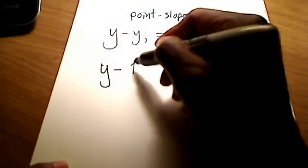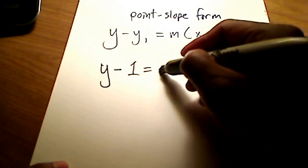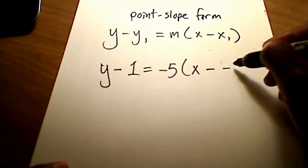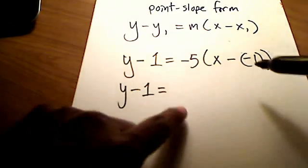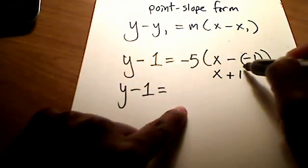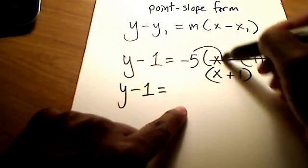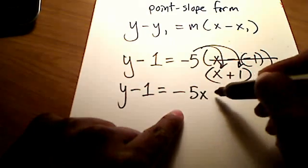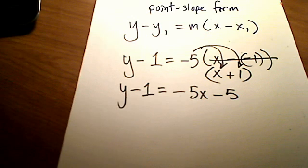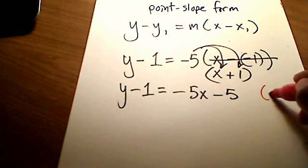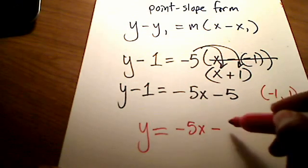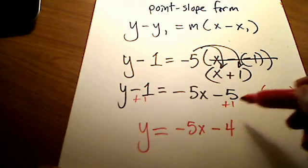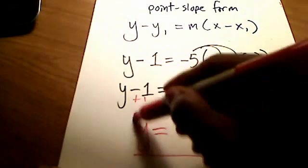The slope was a negative 5. X minus my x value was a negative 1. And I'm going to clean all this up a little bit more here. I'm just going to leave this as y minus 1 on the left side. This right here minus the negative is really x plus 1. Really, that's what that is going on inside here. And distributing the negative 5 to both of these gives me a negative 5x minus 5. One last thing. Let's just add 1 to both sides, and my final answer for the equation of the tangent line at a given point of negative 1, 1 was or is y equals negative 5x minus 4. So, I'm simply just adding 1 to both sides here, just adding 1 to both sides. That's all I'm doing. Final answer. There we go. Hope that helps.